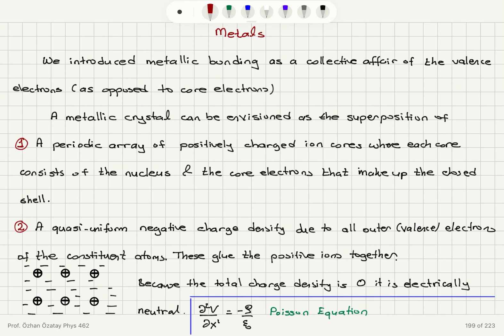The valence electrons are released to the lattice, and we have a periodic array of positively charged ions where each ion core consists of the nucleus and the core electrons that make up a closed shell. The valence electrons are released to the lattice in order to achieve this closed-shell structure, giving us a quasi-uniform negative charge density. These valence electrons basically act to glue the positive ions together, and as a total the charge density is zero — the metal is electrically neutral.